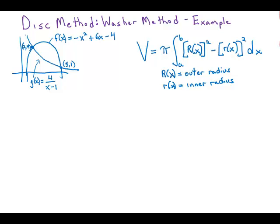In this video I'll provide a numerical example of using the washer method. Suppose we have these two functions, f of x, which is this upside down parabola,